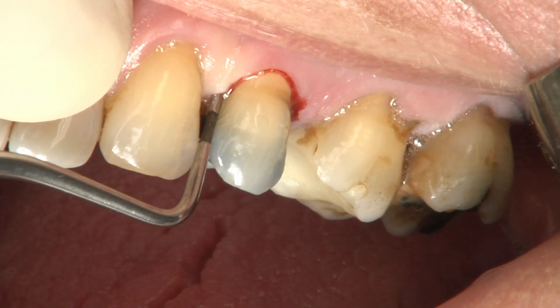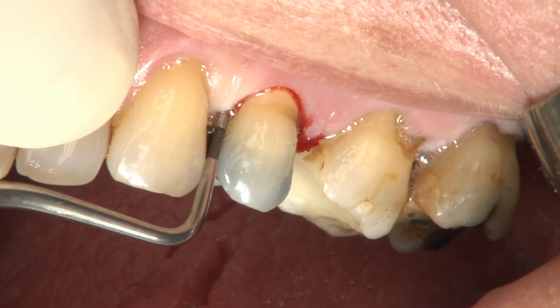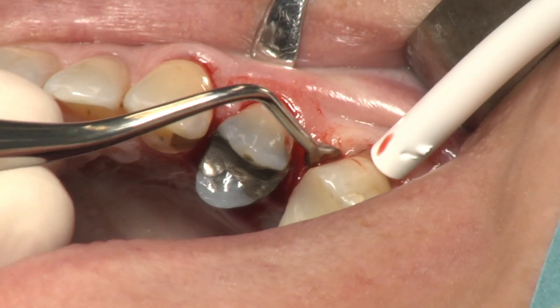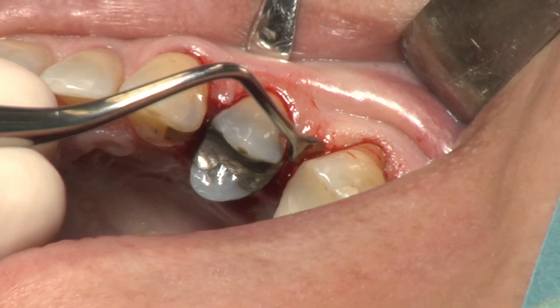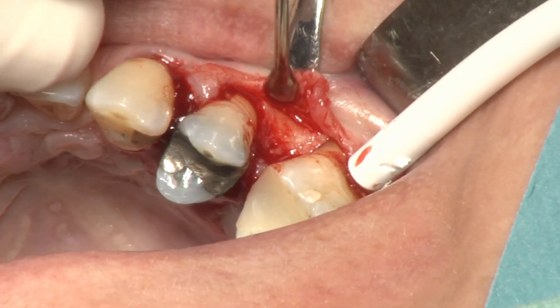In periodontology, repair means the formation of long junctional epithelial cells. In regeneration, in contrast, new clinical attachment including cementum, periodontal ligament, and alveolar bone are formed.